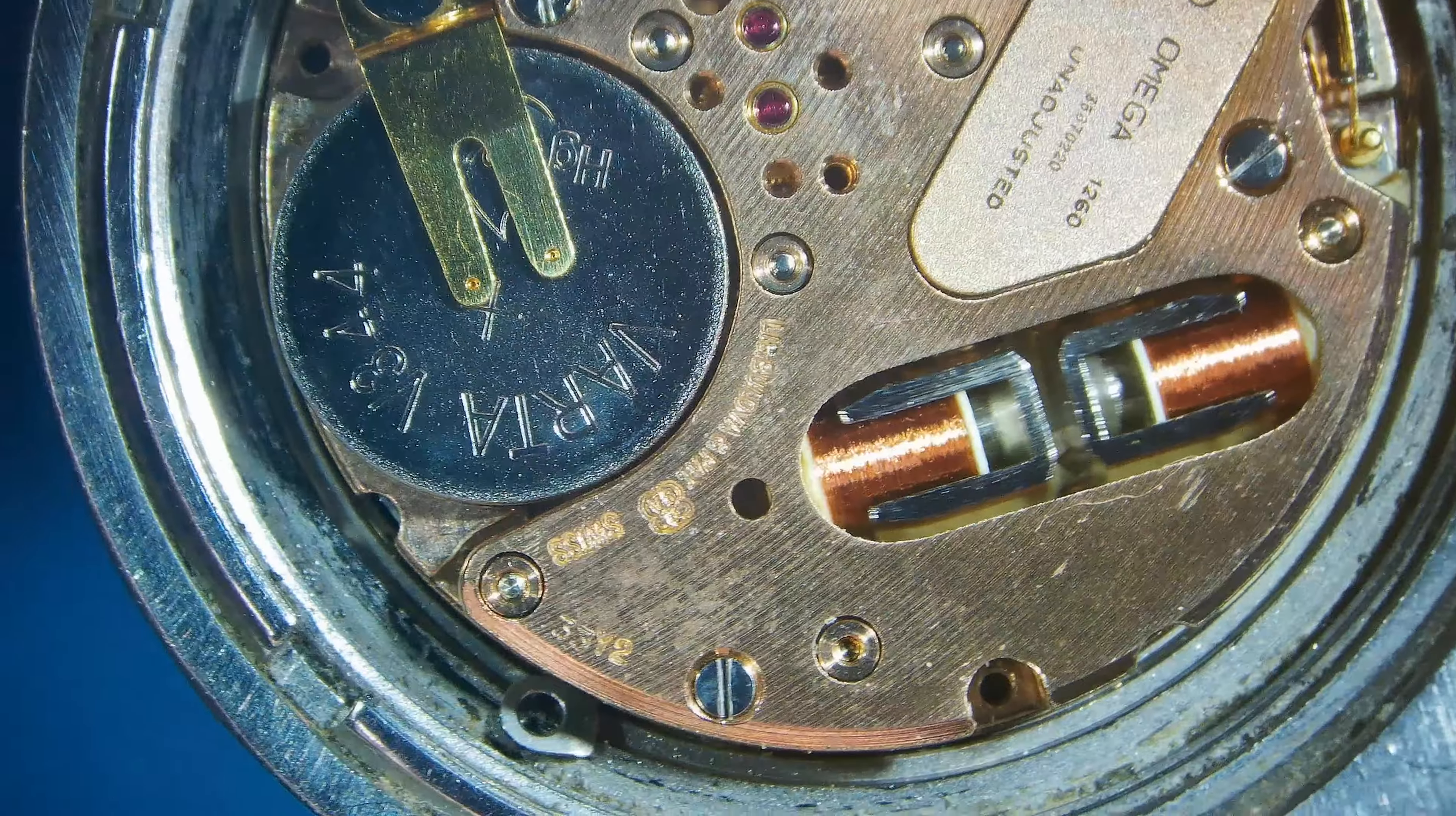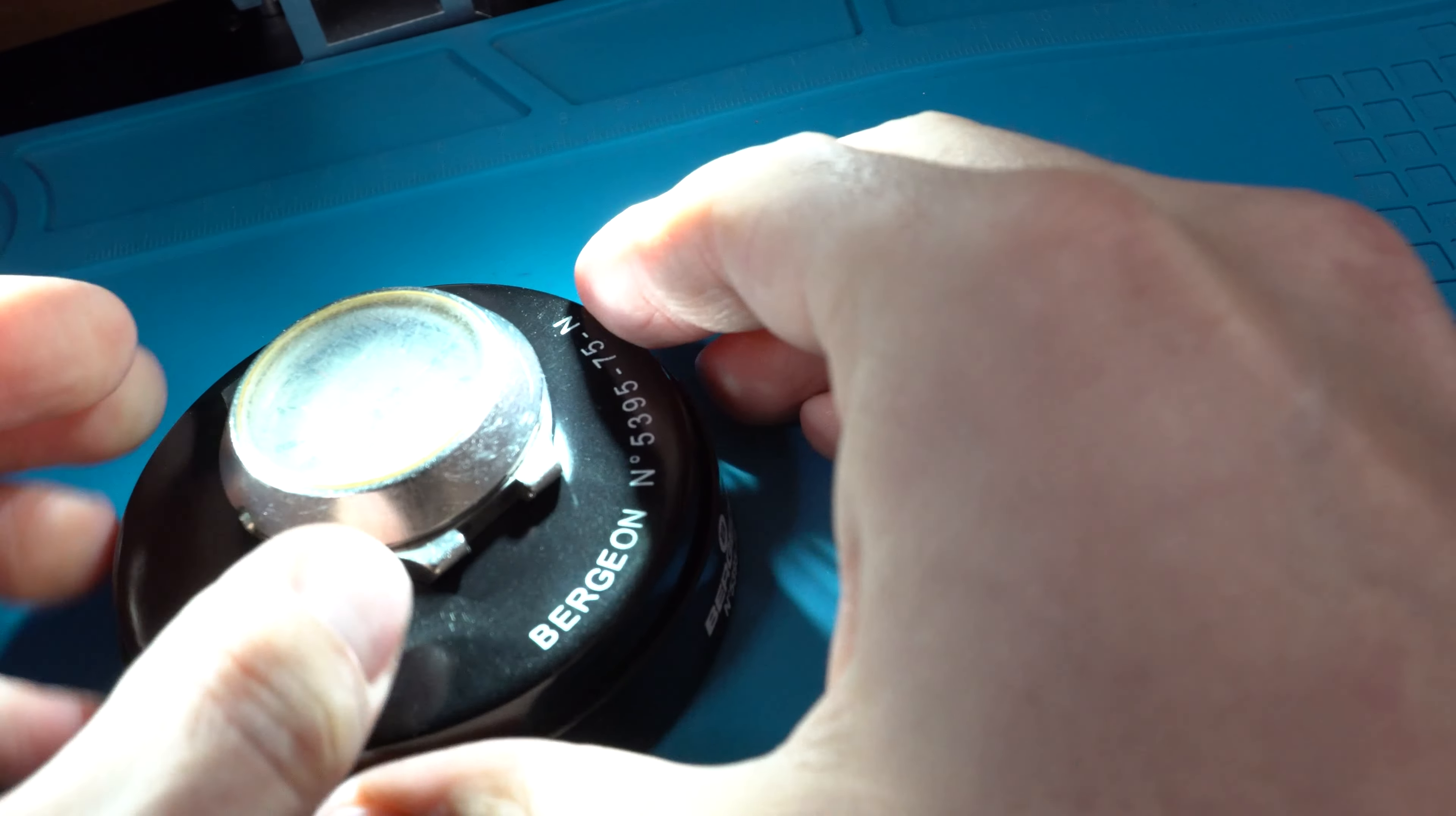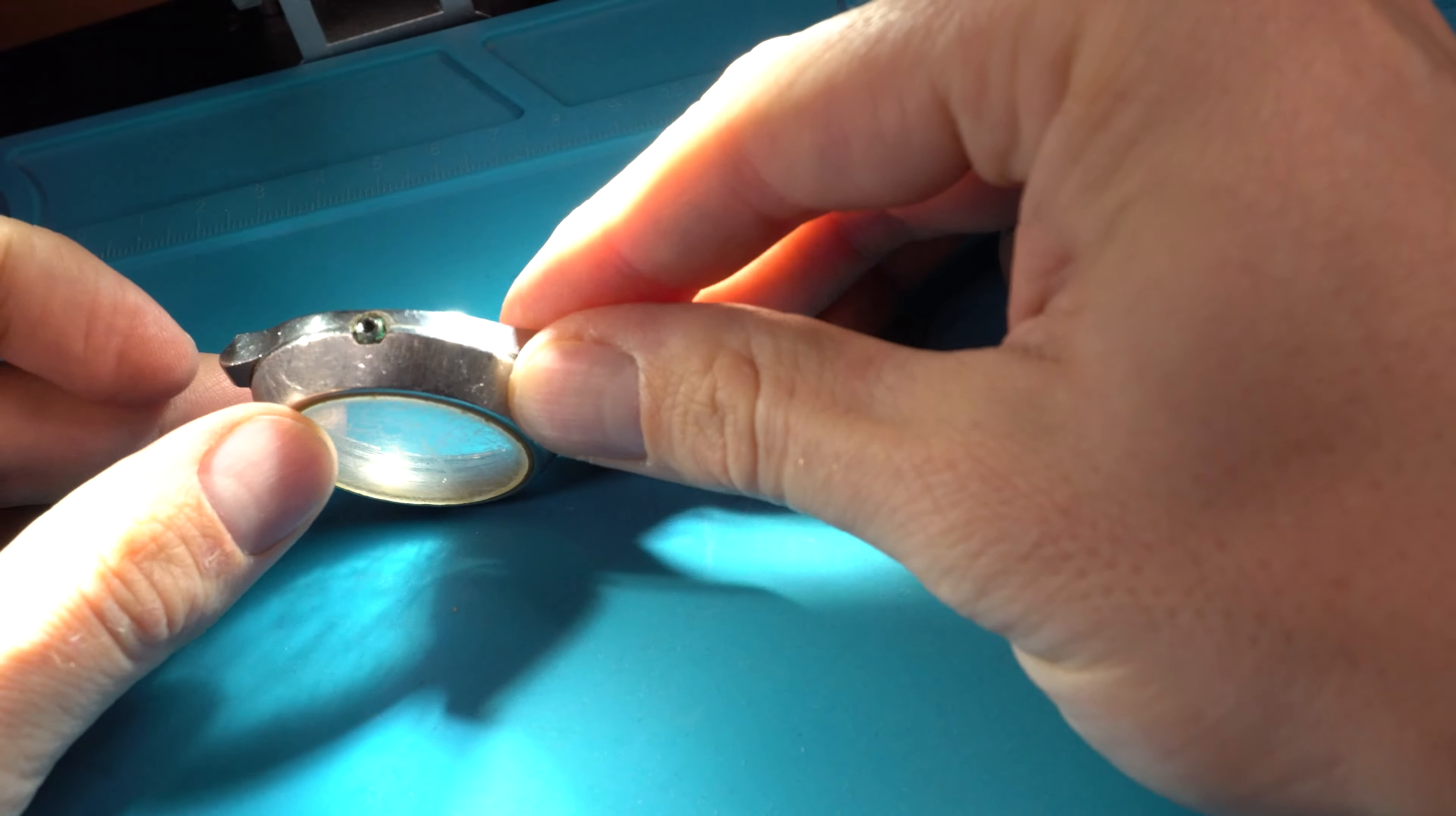And as I'm saying that, you can watch me take off the case clamps and the screws in order to take the movement, flip it on my watchmaking cushion, and free up the case from the movement itself. There we go. And I'll just, as is, put it under my plastic compartment for safekeeping and turn my eyes to the case.